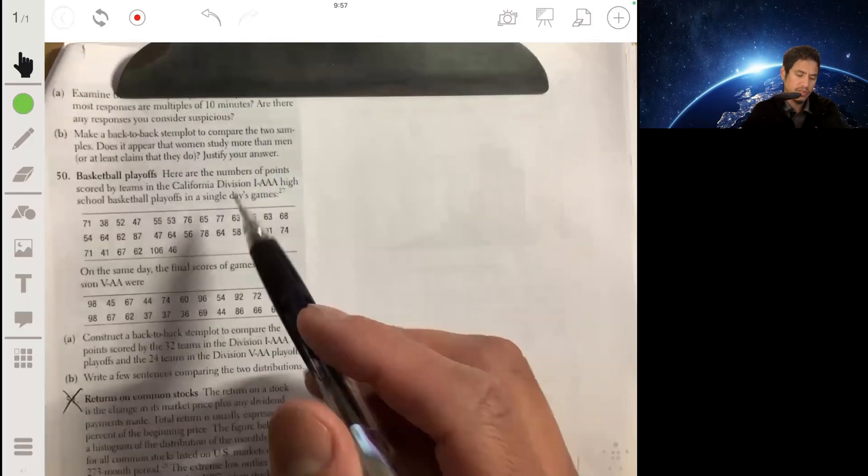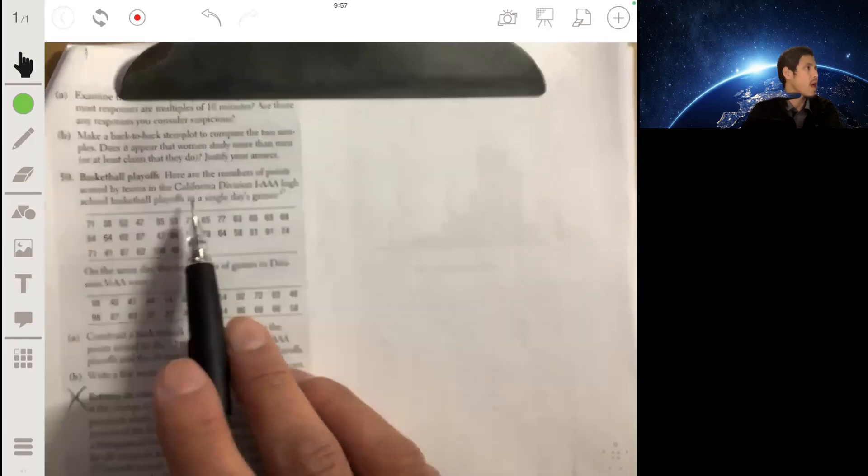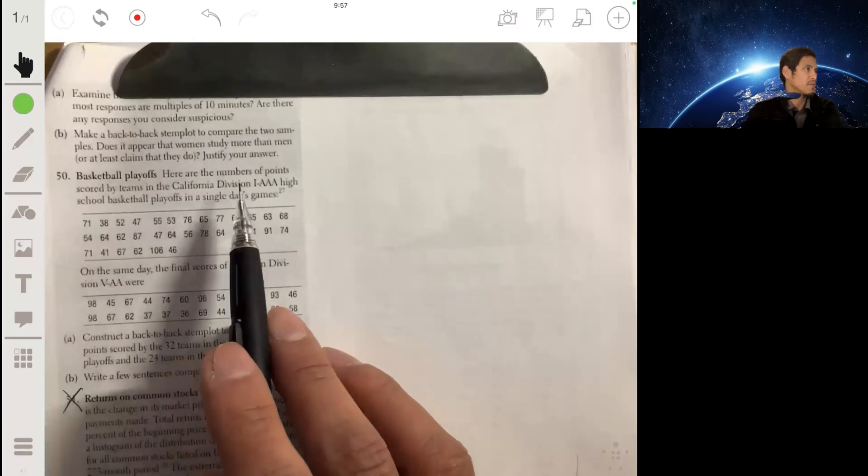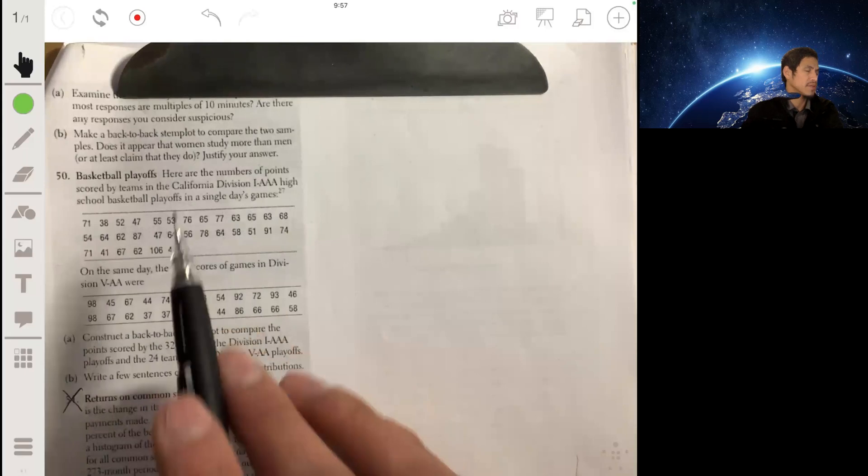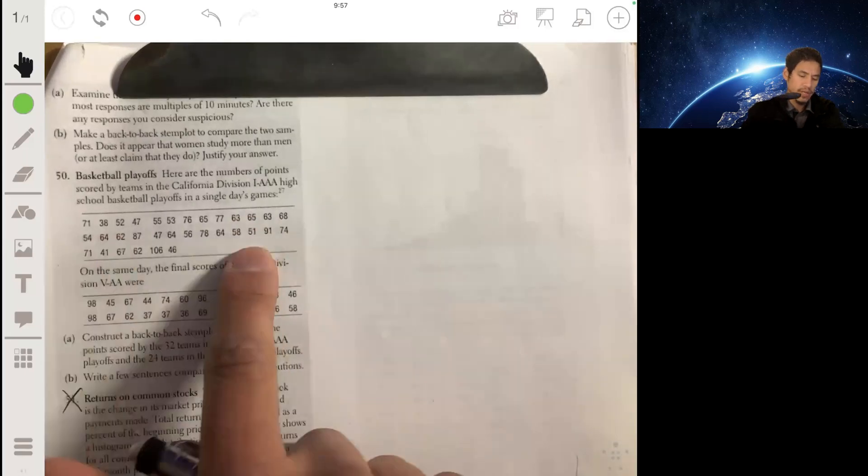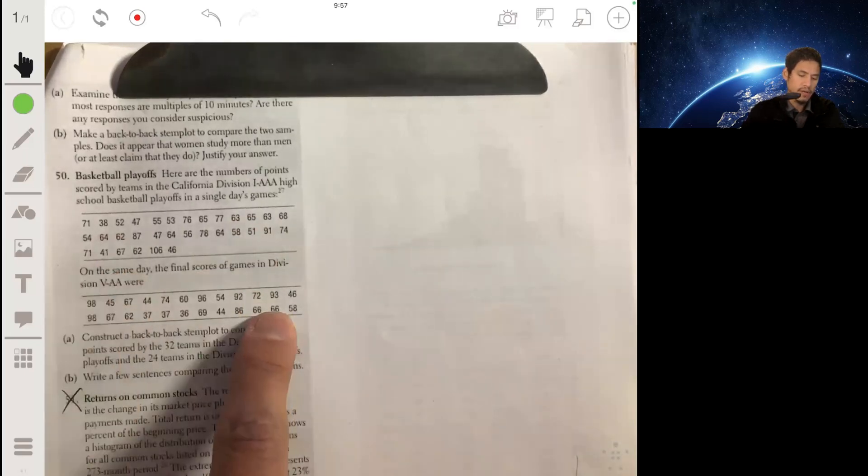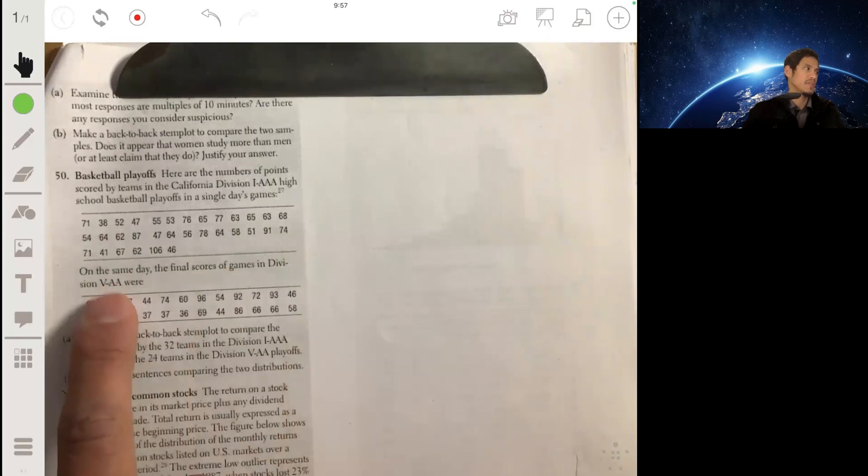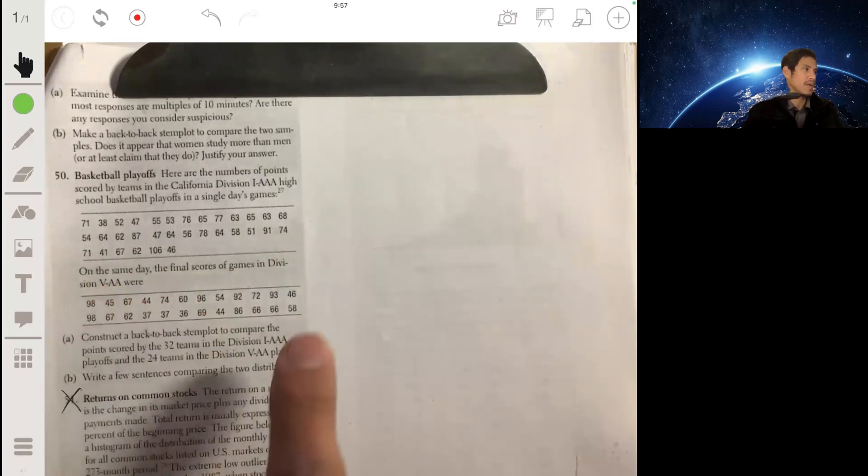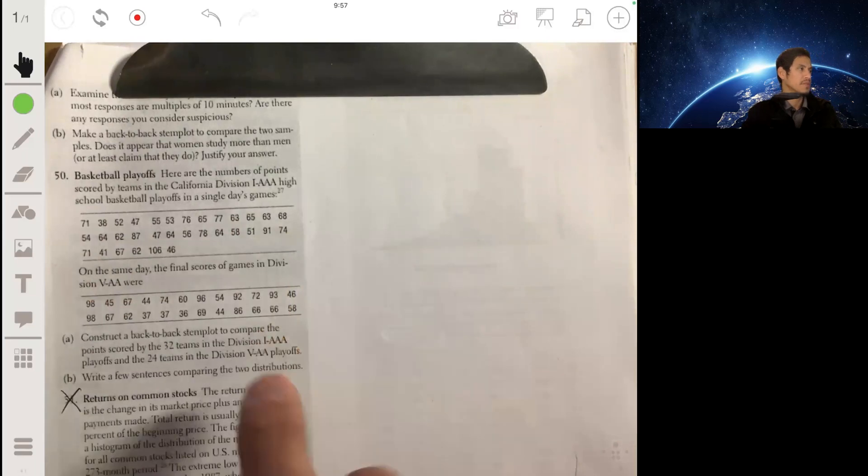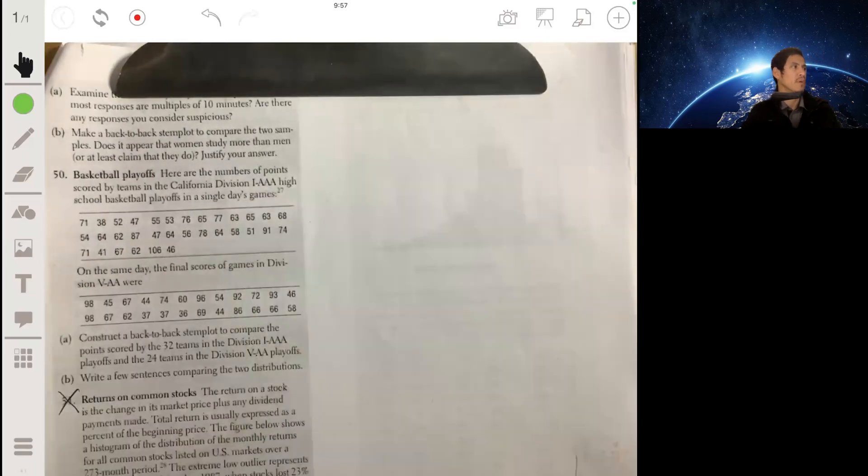All right, so here's the numbers of points scored by teams in the California Division 1 Triple A high school basketball playoffs in a single day, and then here's data from the same day but from another division, Division 5 Double A. So we're gonna make a back-to-back stem plot so we can compare the points scored from both of these divisions.